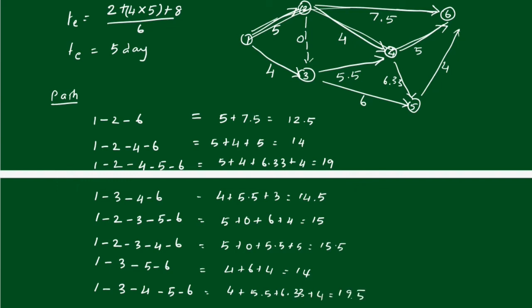The path with the maximum duration is the critical path, and that duration is the project completion time. The maximum duration is 19.5 days, so the critical path is 1-3-4-5-6, and the project completion duration is 19.5 days. We can draw the critical path as a double line: 1-3-4-5-6.